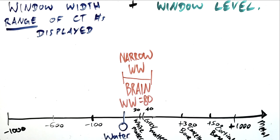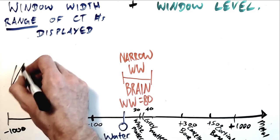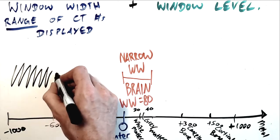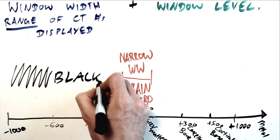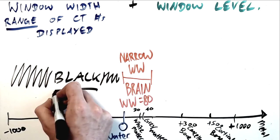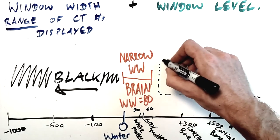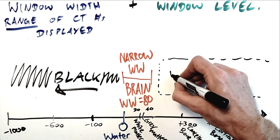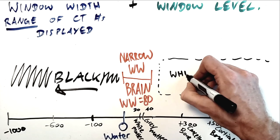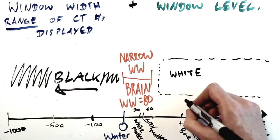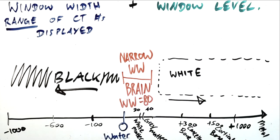It's important to understand that our entire grayscale between black and white is distributed across that window width. So if you use a narrow window, you're squishing that grayscale down to differentiate between similarly dense structures. And if you use a wide window, you can distribute those grays across a very distant range of densities. Any structure with a CT number that falls outside of your window will be displayed as black if it's lower than your window, or white if it's higher than your window.